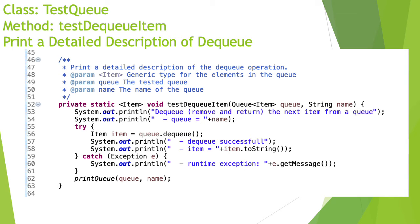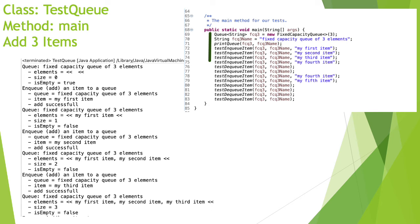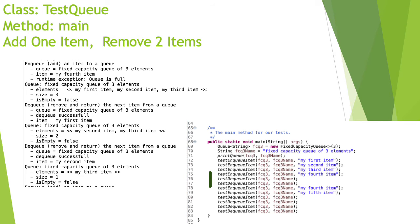We'll test enqueue and dequeue together: we add the first four elements, then take two out, add another two, and then try to take four elements out. First, adding three elements works fine — after each one the queue contains that element. Since the capacity is three, adding the fourth element throws an exception, just as we saw previously.